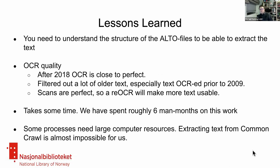Some lessons learned: there's a lot of work to put into the ALTO files to turn them into usable text, but we've written code for that which could be useful for others who want to do the same. On OCR quality: things OCR'd after 2018 are close to perfect on newer newspapers, but material before that is not okay. Things OCR'd prior to 2009 are hardly usable at all — we're dropping almost all of that text. The scans themselves are perfect though, so a proper re-OCR run would give us a lot more text. It took roughly six person-months of work so far.